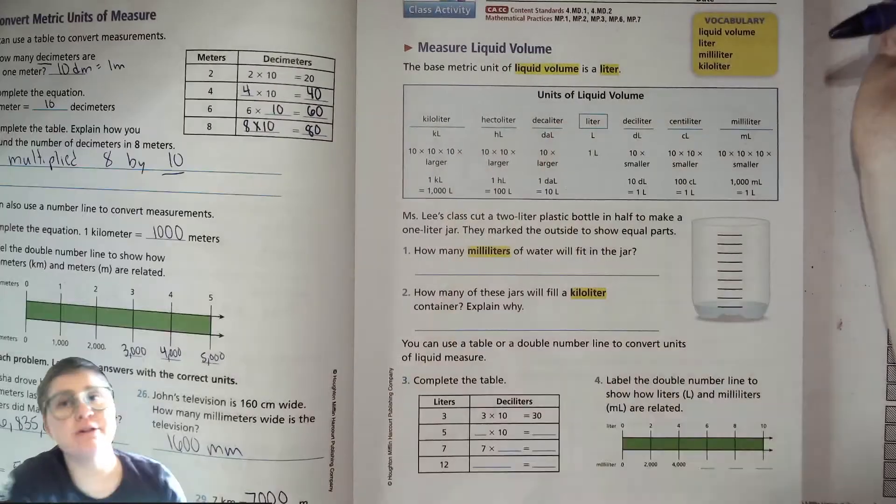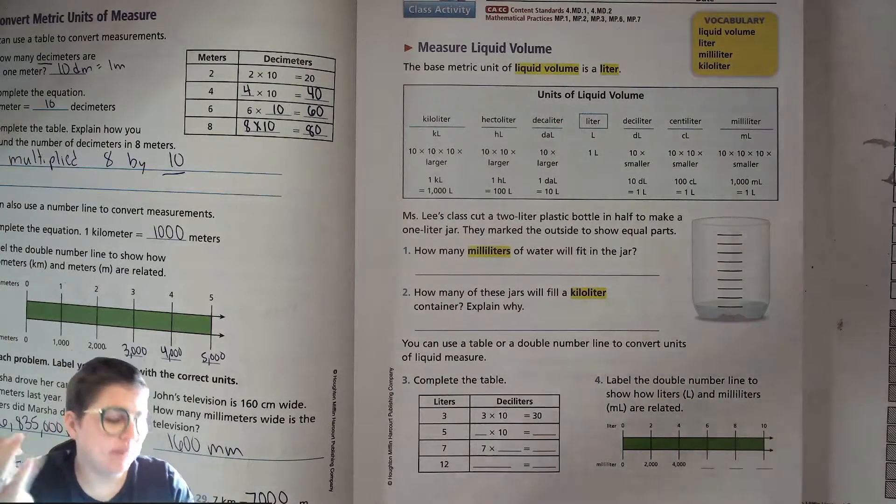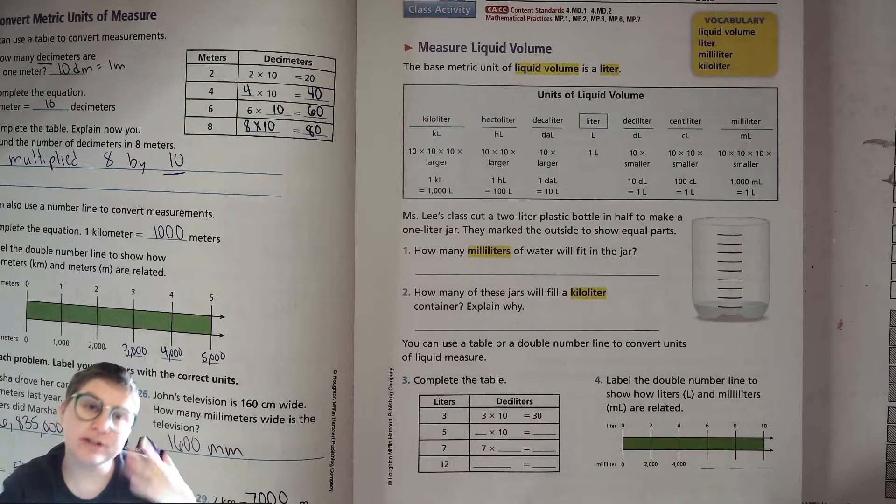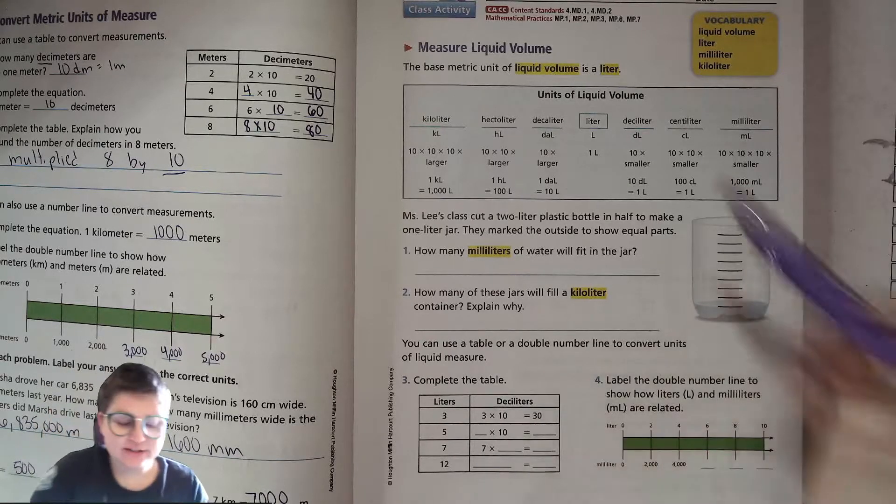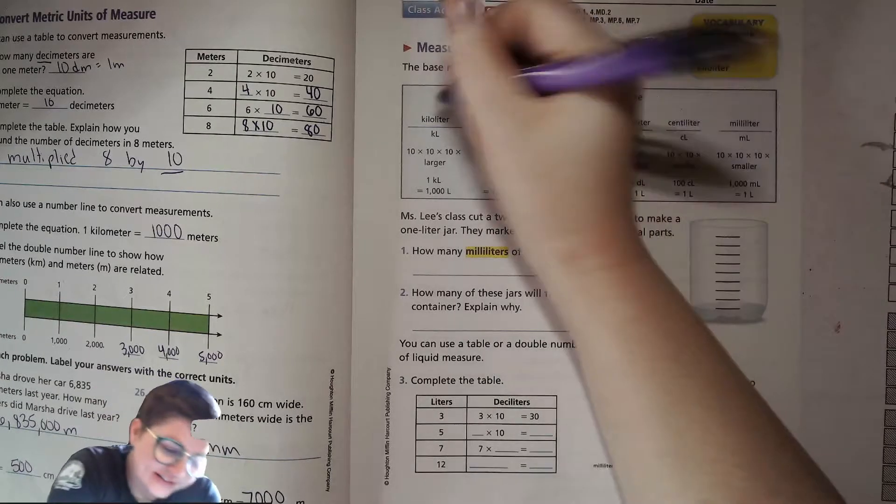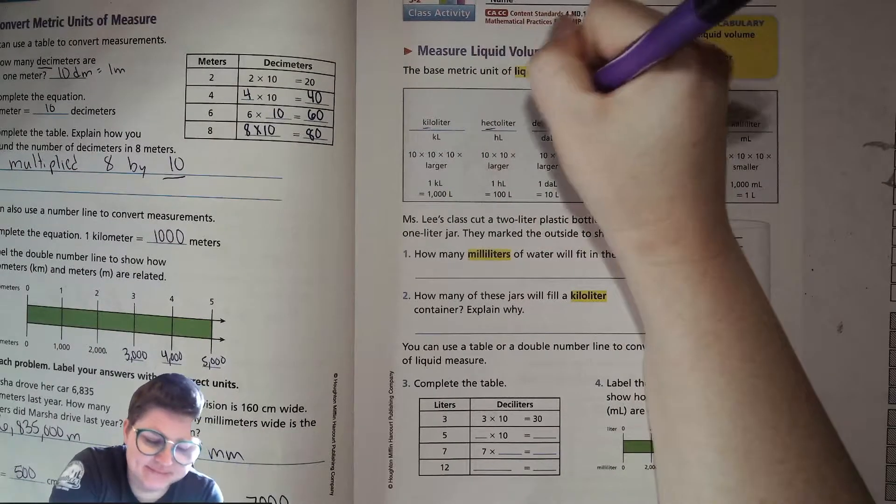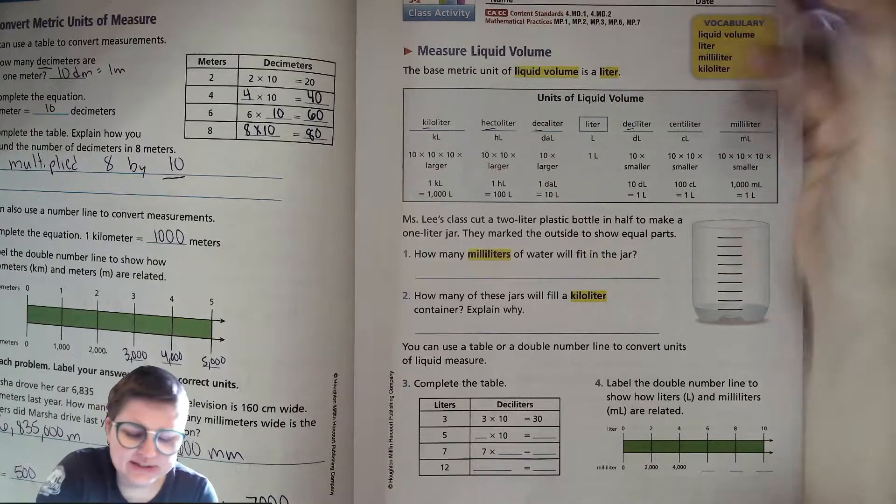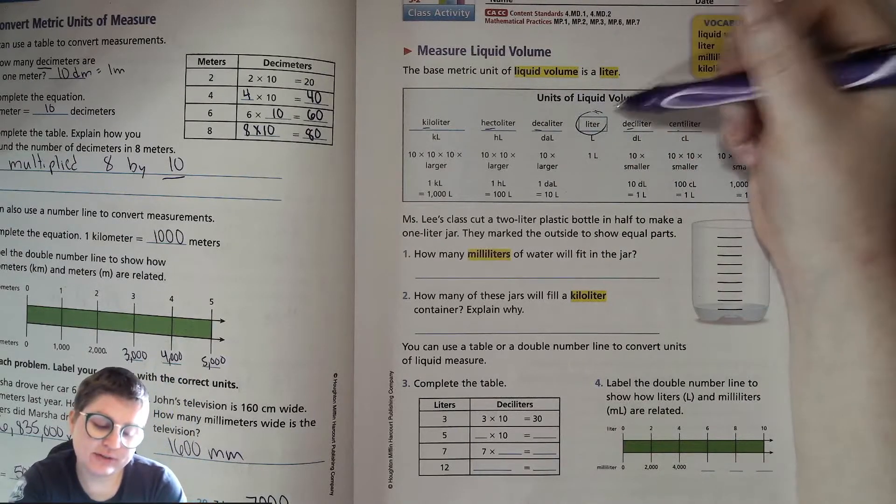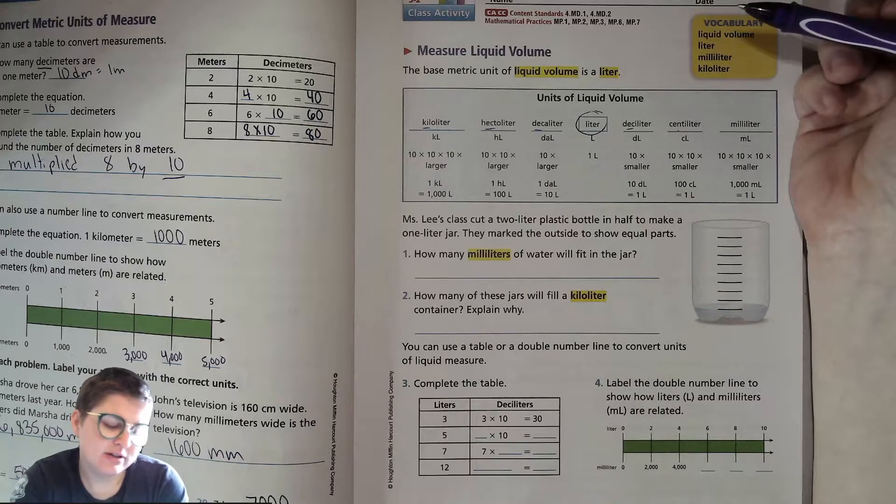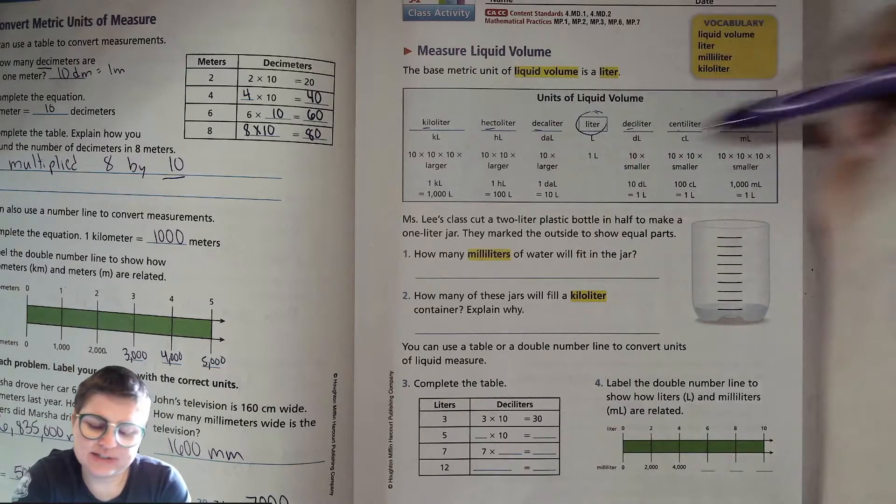The good thing about the metric system, though, is no matter which type of thing you're measuring, whether it's length or volume or mass, all these prefixes stay the same. So basically, you learn one main measuring unit, like for liquid volume, it's the liter.